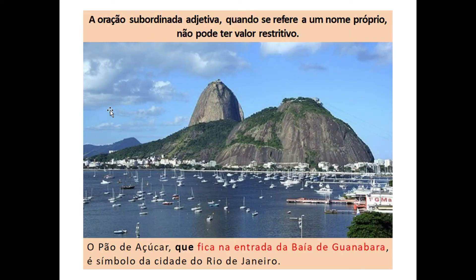Um detalhe bem importante: a oração subordinada adjetiva, quando se refere a um nome próprio, não pode ter valor restritivo — ela vai ter valor explicativo. Exemplo: 'O Pão de Açúcar, que fica na entrada da Baía de Guanabara, é símbolo da cidade do Rio de Janeiro.' O 'que' retoma 'Pão de Açúcar'. A oração principal: 'O Pão de Açúcar é símbolo do Rio de Janeiro.' A segunda: 'O Pão de Açúcar fica na entrada da Baía de Guanabara.' Quando tiver nomes próprios, ela não pode ser restritiva — tem que ser explicativa.